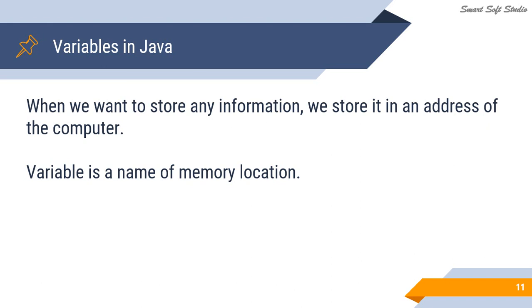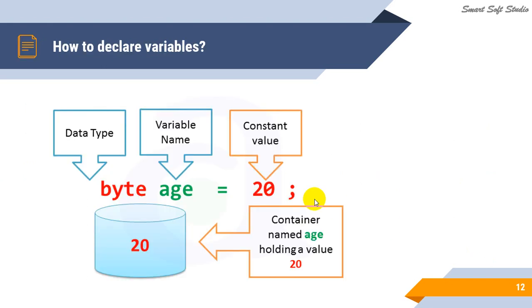If you ask how to declare variables, you can see: data type, variable name, and constant value. Then what is the data type?